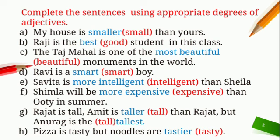Next sentence: Shimla will be dash expensive than Ooty in the summer. This next sentence is quite tricky.